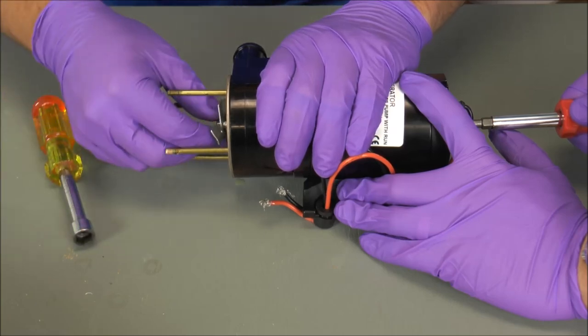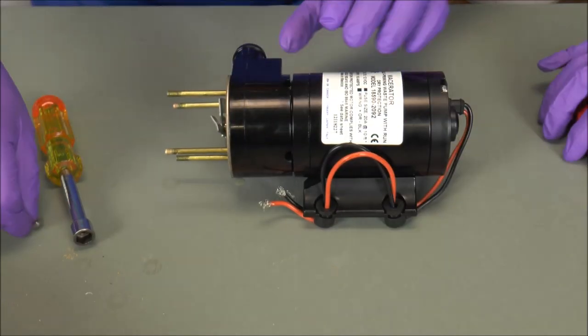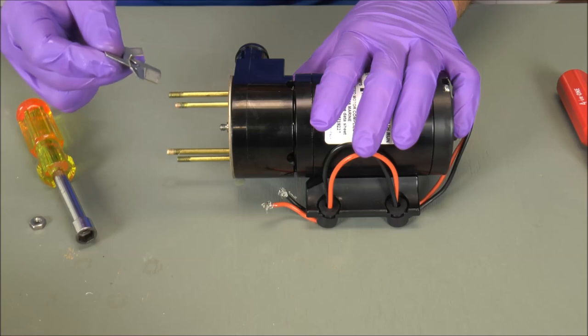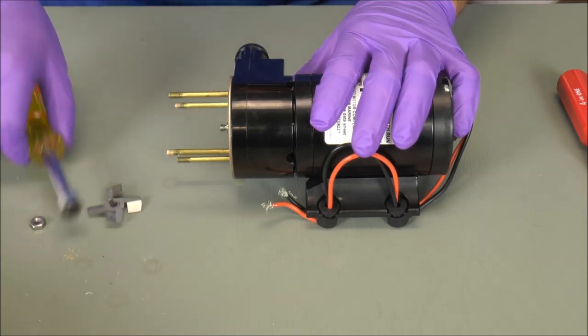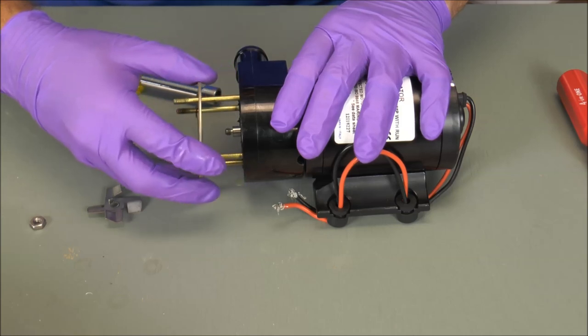So now that it's loosened, take off the lock nut, wiggle the stainless steel chopper blade off, and now we can remove the paper gaskets and the large wear plate.